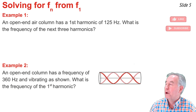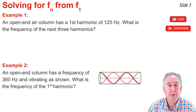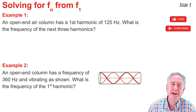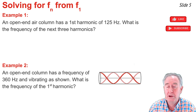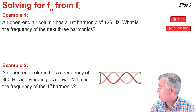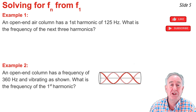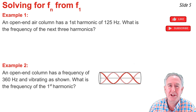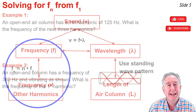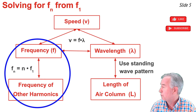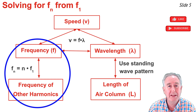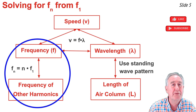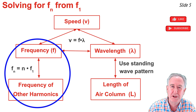In Example 1, I'm given the frequency of the first harmonic, and I want to find the frequency of the second, third, and fourth harmonic. In Example 2, I'm given a standing wave pattern for one of the harmonics and its frequency, and I want to find the frequency of the first harmonic. In each of these two examples, I'm going to use the part of the graphic organizer relating the frequency of all harmonics to the frequency of the first harmonic.